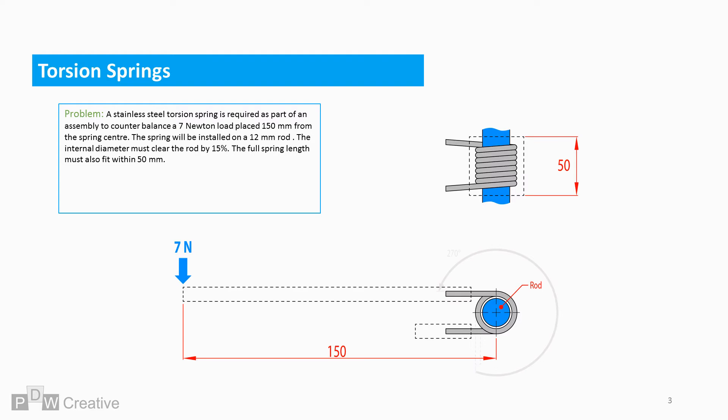The spring will be installed on a 12mm diameter rod. The spring internal coil diameter must clear the rod by 15%. The entire length for the spring must also fit within a 50mm space when assembled.